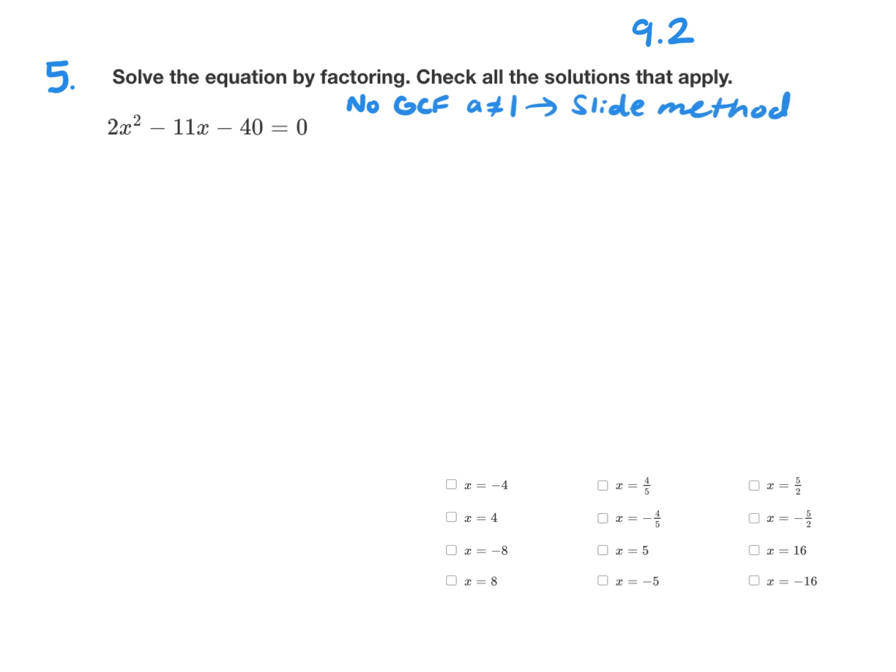For the slide method, you take your a term, slide it to the end and multiply by c. So I'm going to do 2 times negative 40, and then rewrite this as x squared minus 11x. That makes negative 80, so minus 80 equals 0. Now we've turned it into something we can factor with the x method.